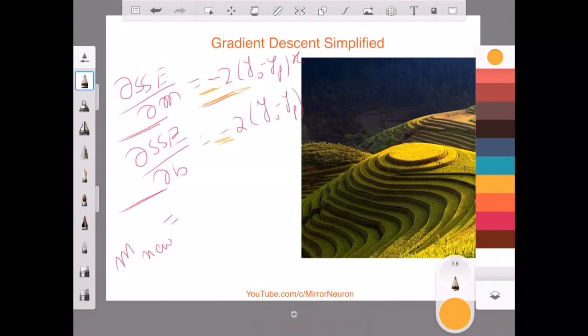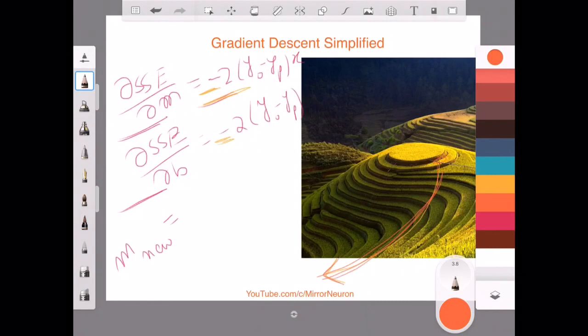Just imagine this is the gradient we are going to follow. That means my error is somewhere here at the very bottom and my main intention is to reach here. Currently I'm here for example, and I want to come all the way to the bottom.